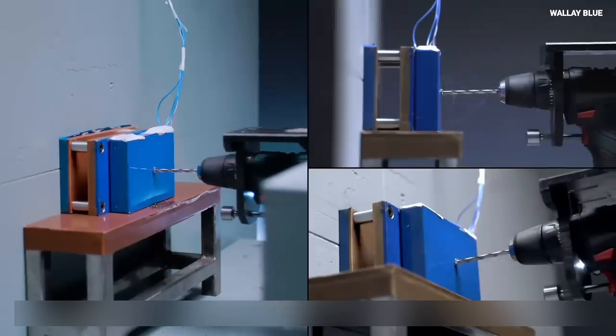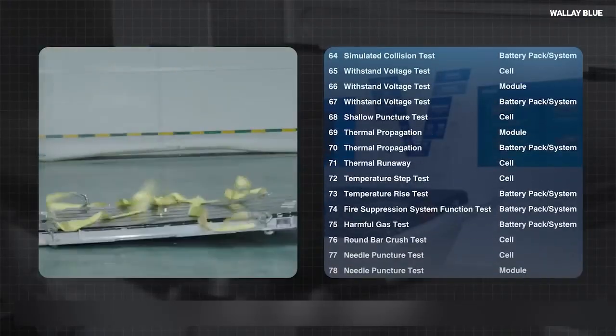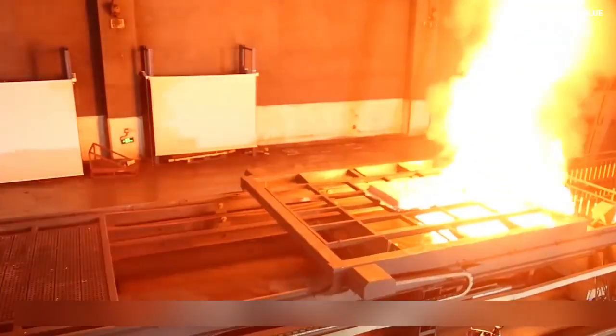Temperature extremes? Naxtra thrives from minus 40 degrees Celsius to plus 70 degrees Celsius. In fact, even at minus 40 and just 10% charge, it can still deliver 90% of its usable power.